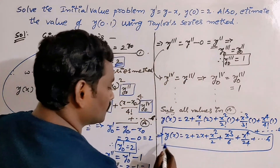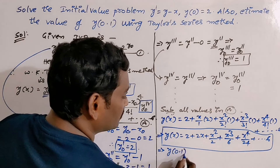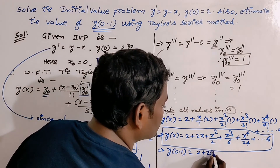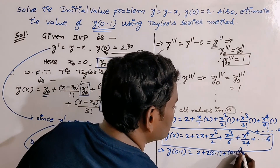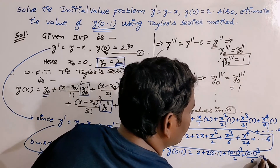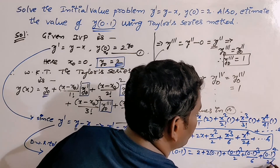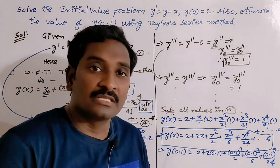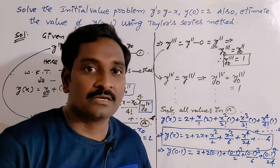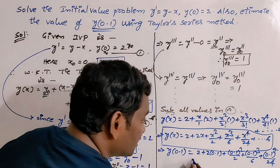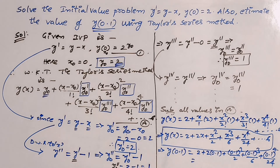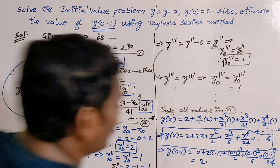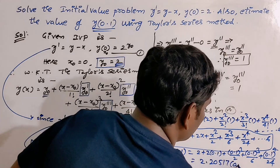Now replace x = 0.1 to estimate y(0.1): y(0.1) = 2 + 2(0.1) + (0.1)²/2 + (0.1)³/6 + (0.1)⁴/24. It is not necessary to include higher degree terms as they become approximately 0. Using a scientific calculator, the answer is 2.20517.